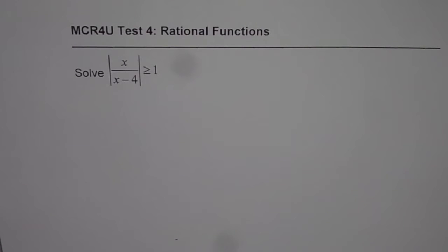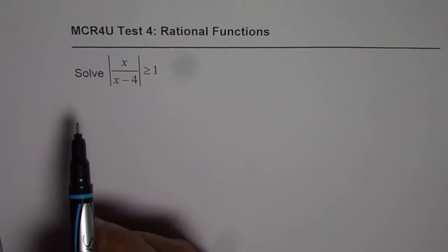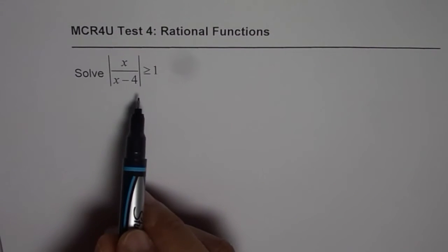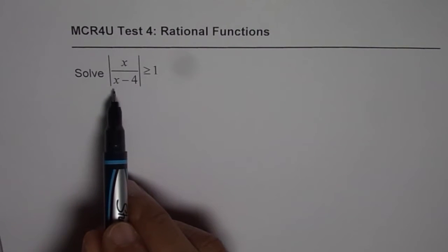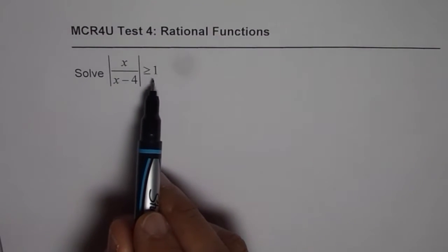I'm Anil Kumar and here is an excellent thinking question for your test on rational functions. Some of my students are having midterm and they need to go through this question carefully, since it involves absolute functions, rational functions, and inequalities. The question is: solve the absolute value of x over x minus 4, greater than or equal to 1.